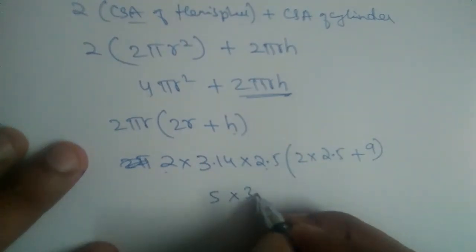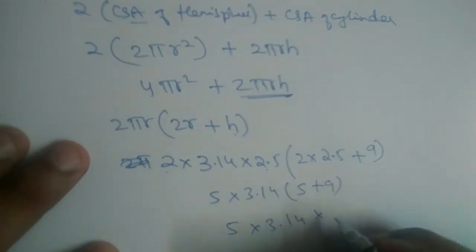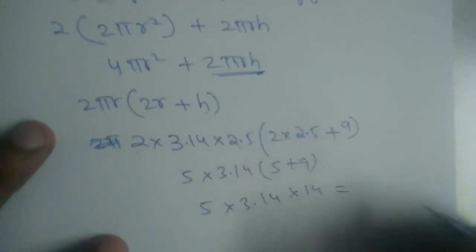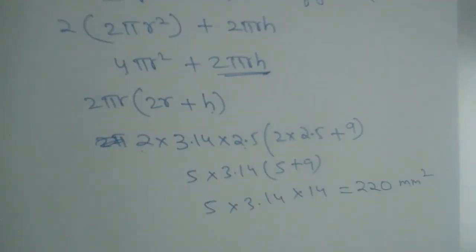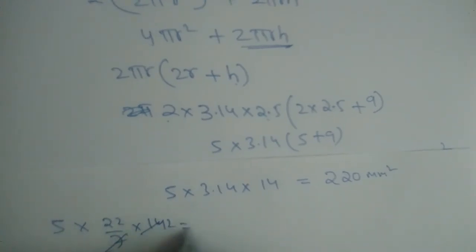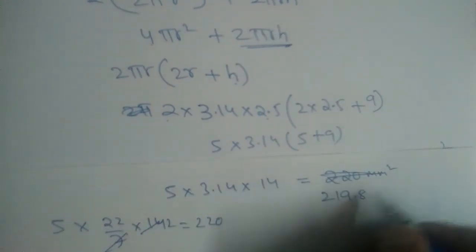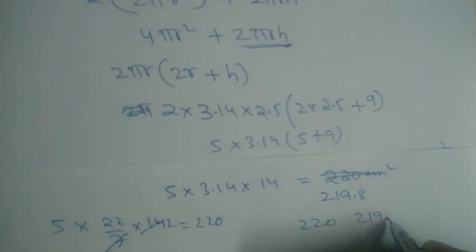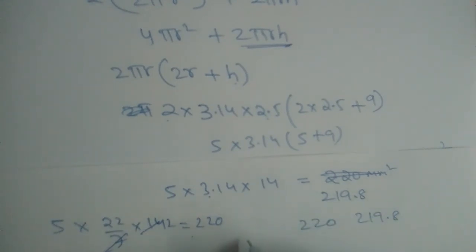Substituting: 2 × π × 2.5 × 14 = 5 × π × 14. This gives us 5 × 3.14 × 14 = 219.8 mm², or approximately 220 mm² when using π = 22/7. Both values are approximately the same: 220 mm² with 22/7 and 219.8 mm² with 3.14.